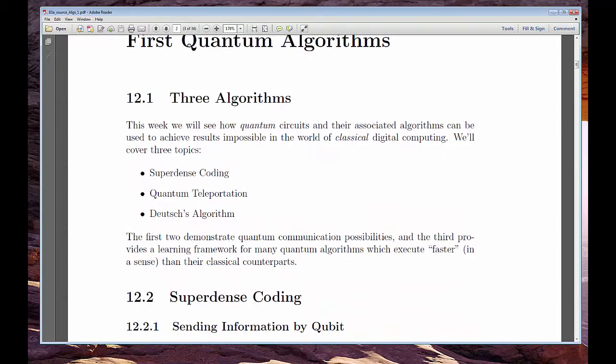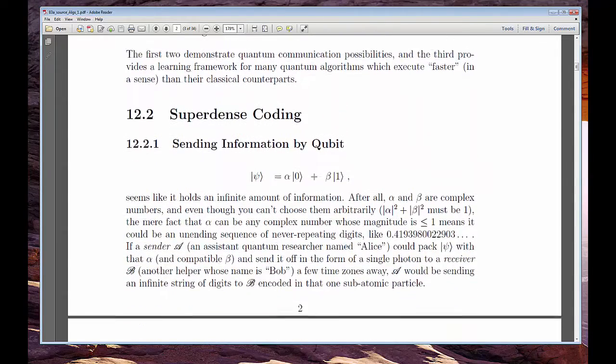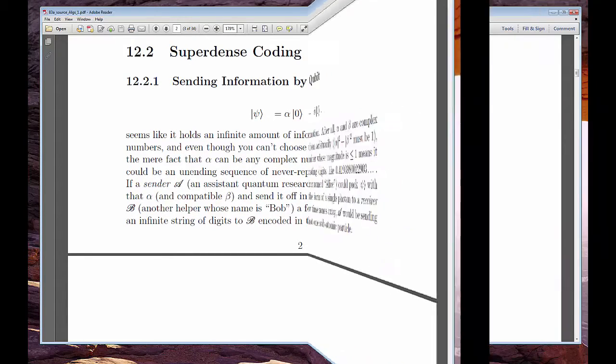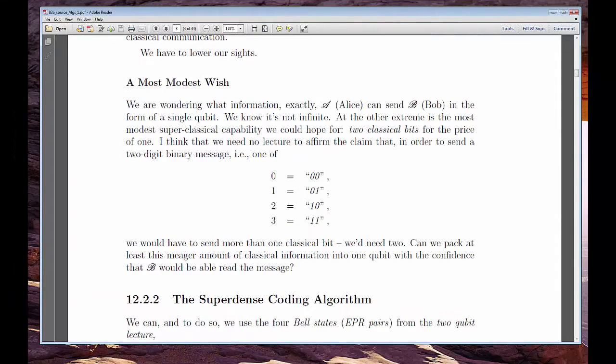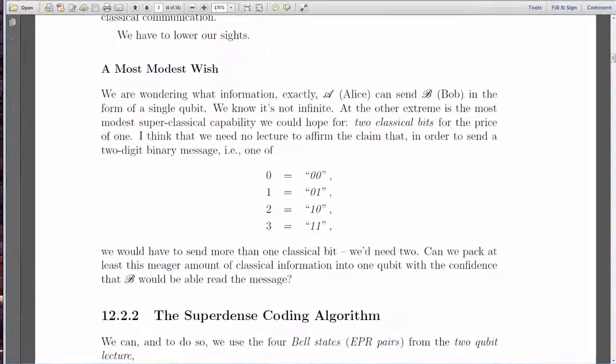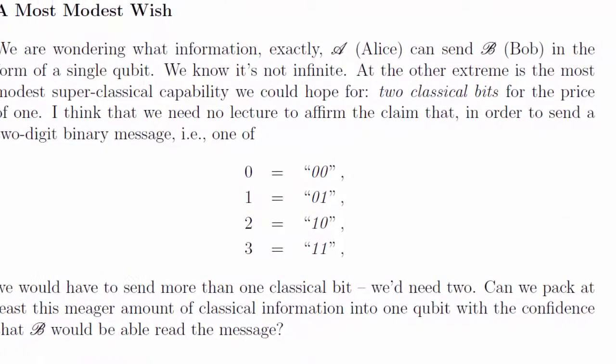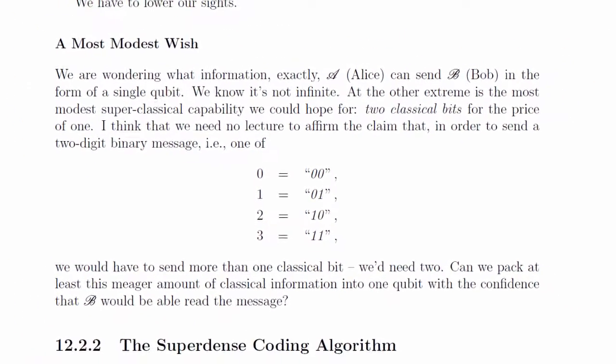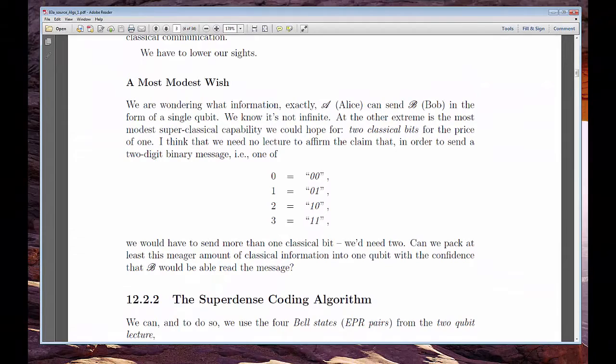The first algorithm is called Superdense Coding. It's less dramatic than it sounds, but still quite impressive. It tells us that Alice can send Bob a single qubit – remember, that's one subatomic particle – across space and, within that unimaginably small state, communicate one of four possible two-bit messages: 00, 01, 10, or 11. It would take two ordinary bits, each probably consisting of several thousand atoms, to express the same amount of information.